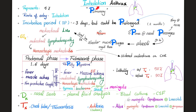Inhalation anthrax has two phases: first, the prodromal phase, followed by the fulminant phase. The prodromal phase lasts between one and six days and is nonspecific — fever, muscle aches or myalgia, nonproductive cough; influenza can do this. The fulminant phase, however, is severe. You have fever, massive edema — hashtag edema factor, hashtag edema toxin — mediastinal lymphadenopathy, hemorrhagic mediastinitis, hypoxia, bacteremia, sepsis, septic shock, and sometimes even meningitis. Yes, anthrax can lead to meningitis.